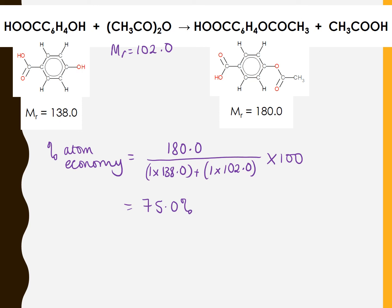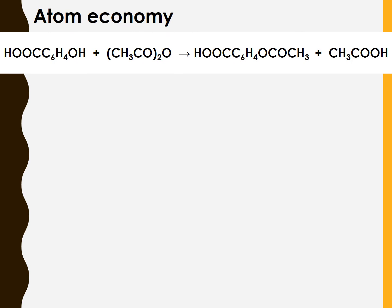Which isn't too bad, but it does say that 25% of the mass of those starting materials is therefore wasted. In this case, it's there because there's a second product, this ethanoic acid second product here, which is not a desired product, is being wasted.